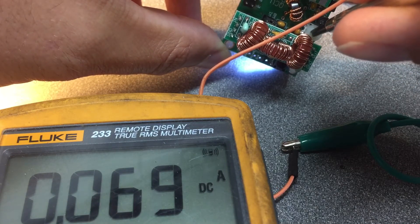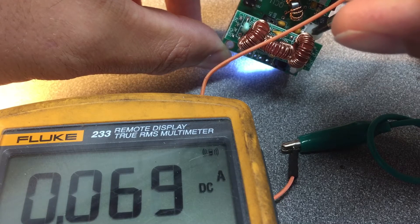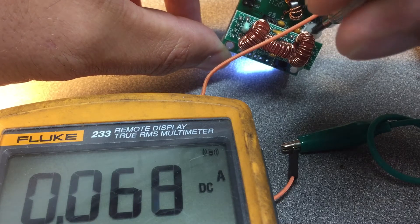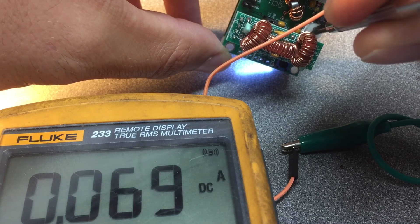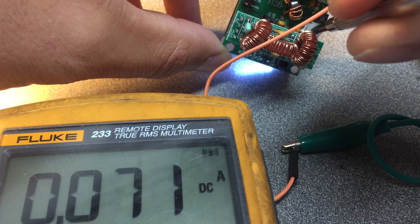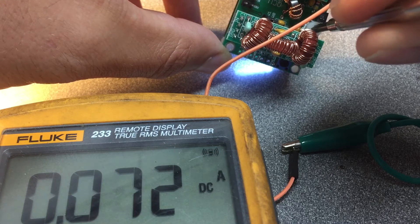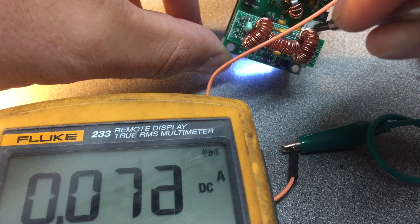Now we're going to turn it clockwise. You'll notice I'm at 68 or 69 milliamps. Actually, you see right there we just went to 72, so I'm going to back it off just a little bit.